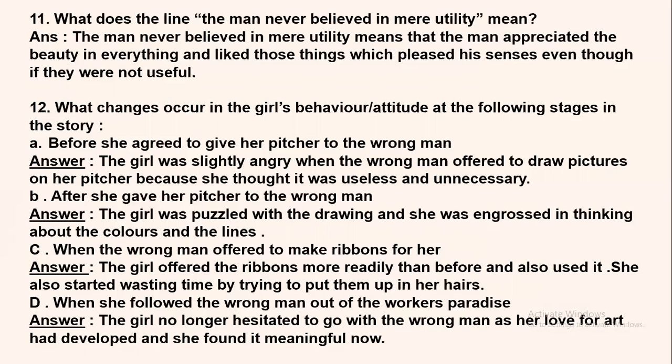Question 12: What changes occur in the girl's behavior or attitude at various stages in the story? At the first stage — before she agreed to give her picture to the wrong man — the girl was slightly angry when the wrong man offered to draw pictures on her pot because she thought it was useless and unnecessary. She considered him a useless fellow doing unwanted things and got angry at the idea of him drawing on her picture.